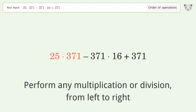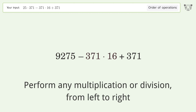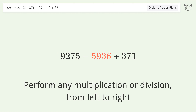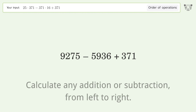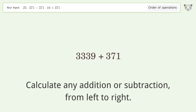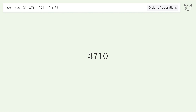371 equals 92.75; 371 times 16 equals 59.36. Then calculate any addition or subtraction from left to right: 9275 minus 5936 equals 3339, and 3339 plus 371 equals 3710. So the final result is 3710.